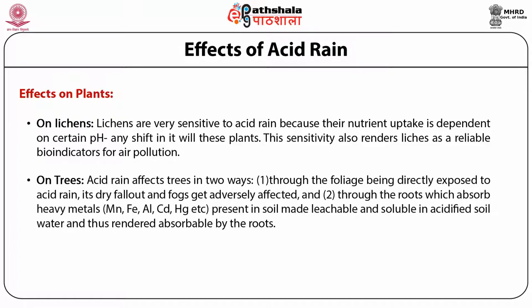Acid rain also affects trees in two ways: first, through the foliage being directly exposed to acid rain — its dry fallout and fogs adversely affect the leaves. Secondly, through the roots, which absorb heavy metals such as manganese, iron, aluminium, cadmium and mercury present in the soil.